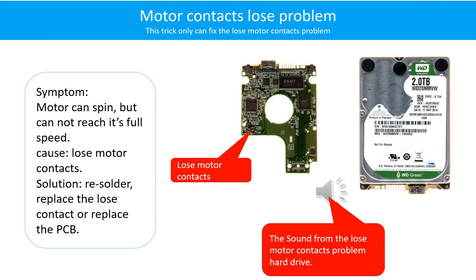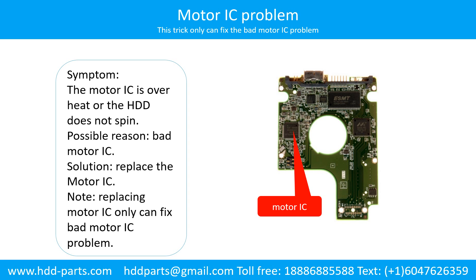Here is the sound from a hard drive with the loose motor contacts problem. Motor IC problem: the motor IC is overheat or the hard drive does not spin. Possible reason — the motor IC is bad. Solution — replace the motor IC. Note: replacing the motor IC only fixes the bad motor IC problem. If the hard drive PCB has another problem, or the hard drive itself has a problem, replacing the motor IC will not help.